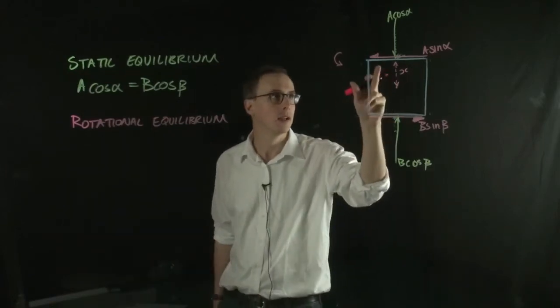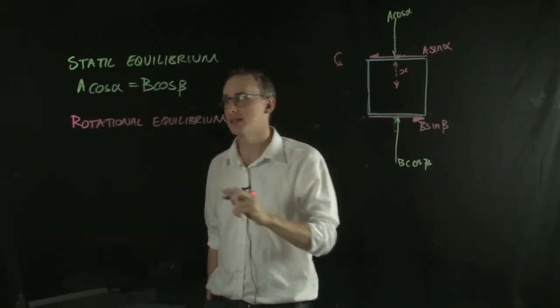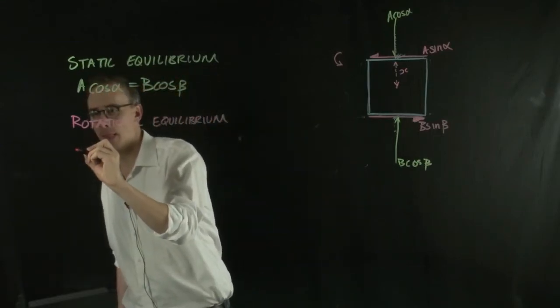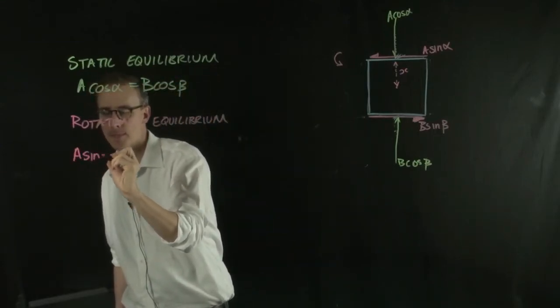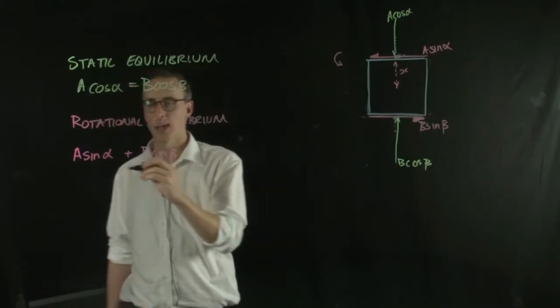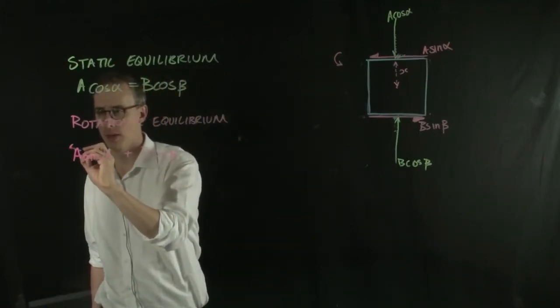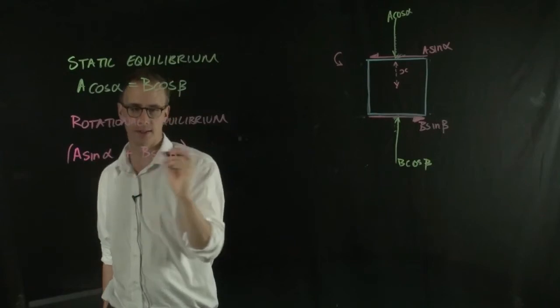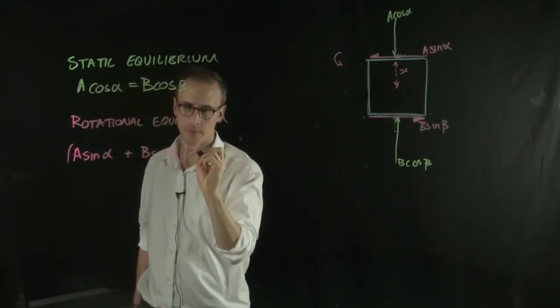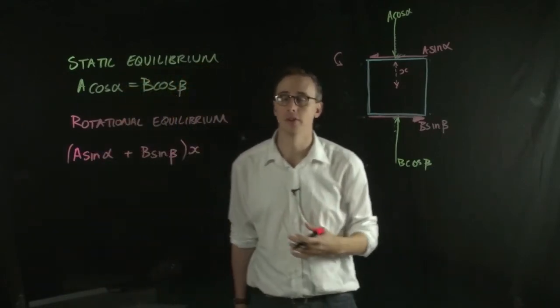but we take A sine alpha and add it to B sine beta, both of those acting through a distance of X. So multiply both of those by X.